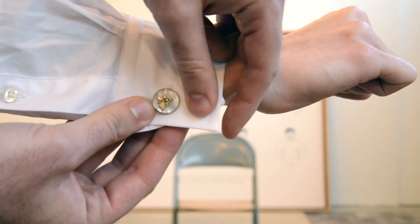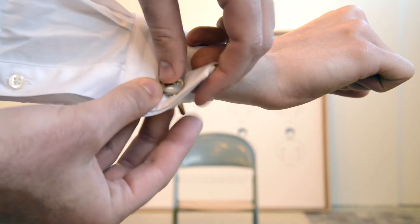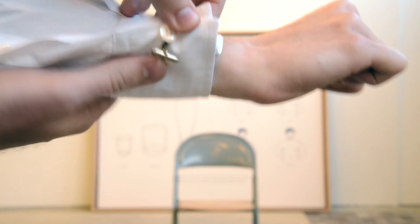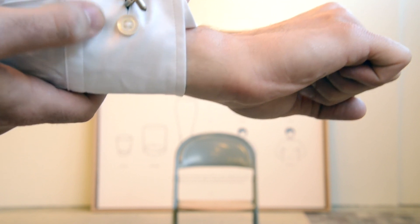So you've got the cufflink in on this side, and then you have it connected on the back side here. And so it's going to sit right in between the two buttons.